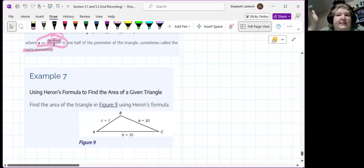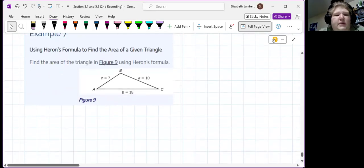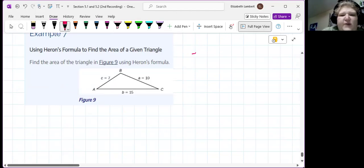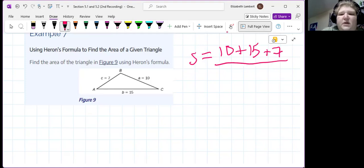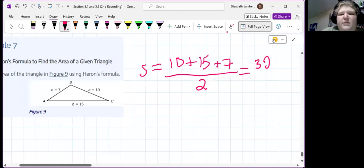It's more of a just like, yay, it happens to work. All right, find the area. So, step number one is find the semi-perimeter, 10, plus 15, plus 7, all divided by 2. That is 32 divided by 2, which is 16.